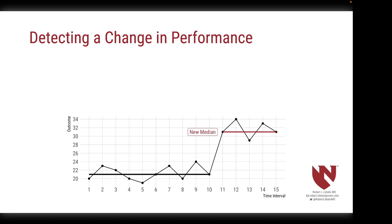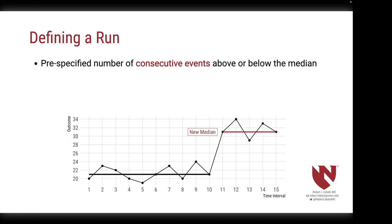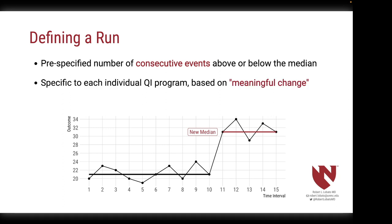The other thing that run charts can be really effective for is detecting changes in performance over time. We start by pre-defining a number of consecutive events above or below the median that constitute a run, or a shift. When a run is identified, a new median is calculated — some people call that rebasing. It's important to pre-specify this number, as it will be specific to each individual quality improvement program and is based on what an expert would call meaningful change. An outcome measured on a daily basis may require several consecutive events, while one measured weekly, monthly, or annually may need fewer.